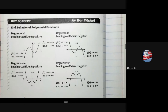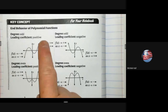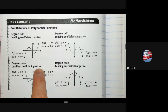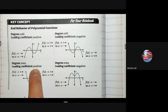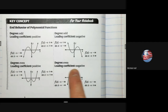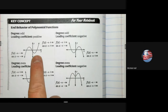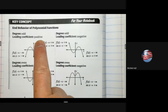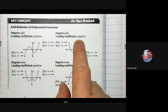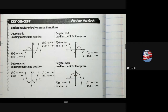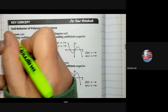From the prior calculator activity, we made a conjecture about end behavior. When the degree is odd, the tails go in opposite directions. When the degree is even, the tails go in the same direction. A positive leading coefficient means tails face upward; negative means downward. For odd degree with positive leading coefficient: left tail down, right tail up. With negative: left tail up, right tail down.